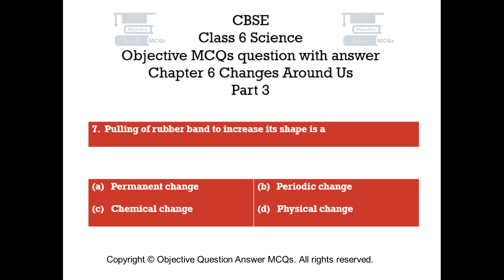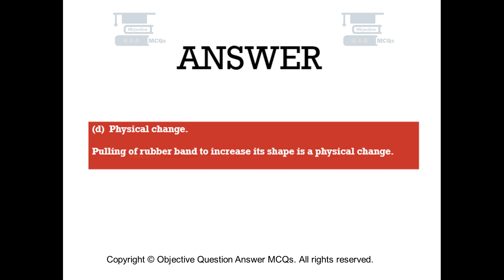Question number 7. Pulling of a rubber band to increase its shape is: Option A, permanent change. Option B, periodic change. Option C, chemical change. Option D, physical change. The right answer is option D — pulling of a rubber band to increase its shape is a physical change.